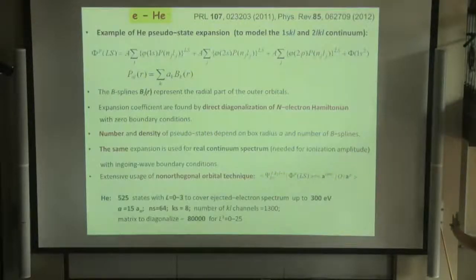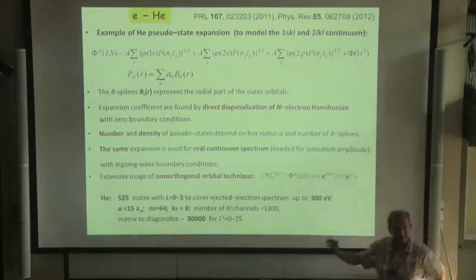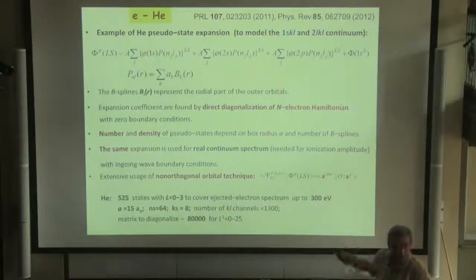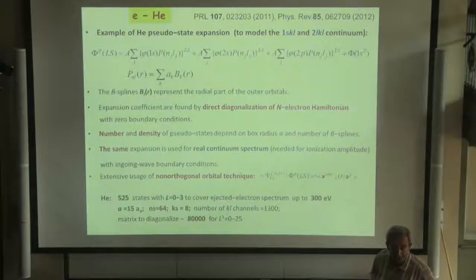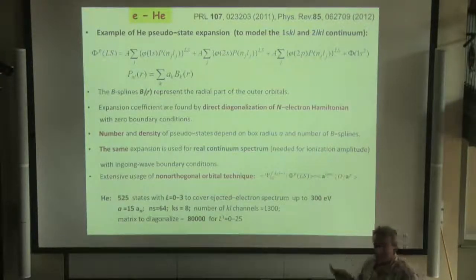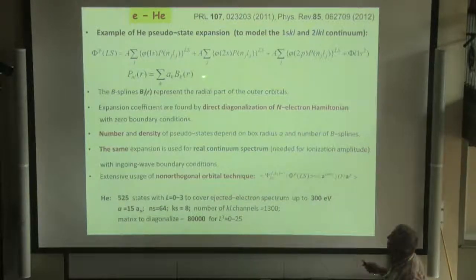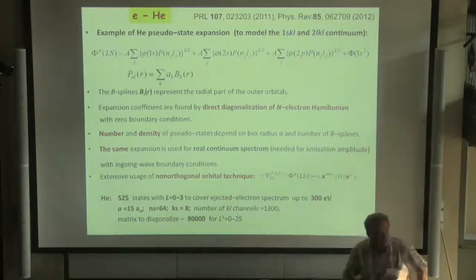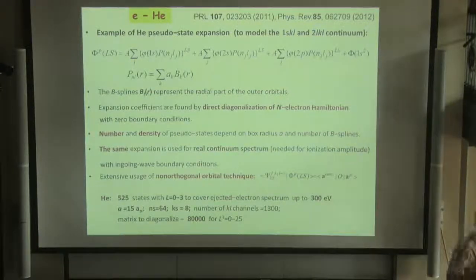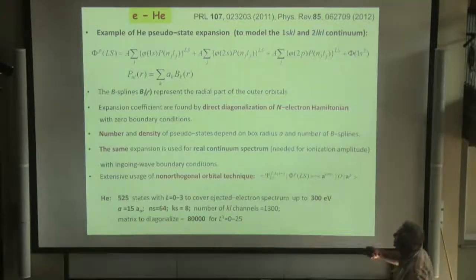Check with this approach. We begin with helium, of course, because there are many benchmark experimental calculations. Here, our expansion for the target states. Just our expansion includes exclusion of 1S, 2S, into P ionic states. And here our considerations and parameters for our calculation show in our approach the B-spline representation radial part expansion coefficients.